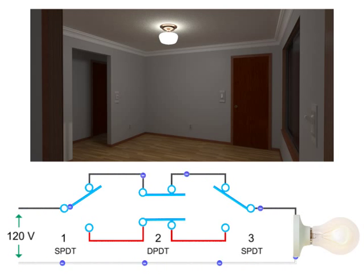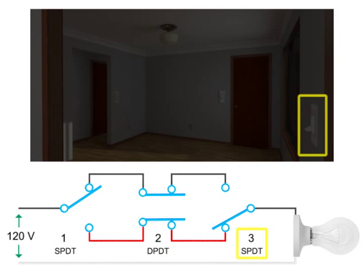If the position of switch two remains unchanged and switch one is up while switch three is down, the circuit will be broken and current will not flow through the circuit to light the bulb.